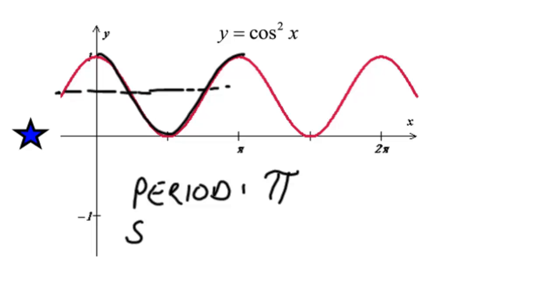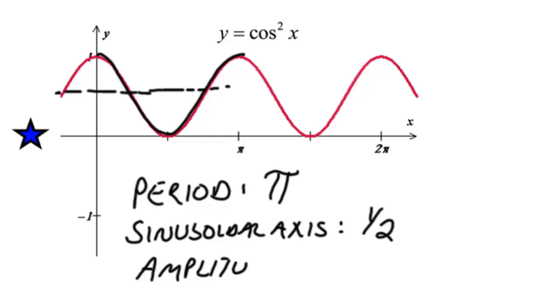So, our sinusoidal axis is at 1 half, and an amplitude of 1 half. So, here we could say that cosine squared could also be written as 1 half plus 1 half cosine 2x.